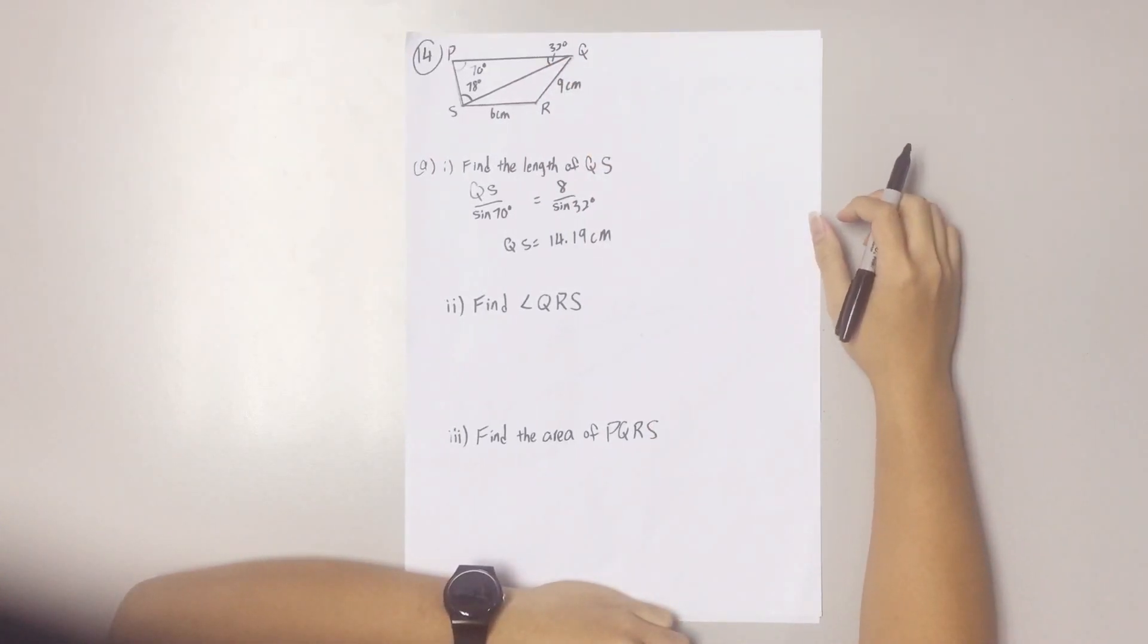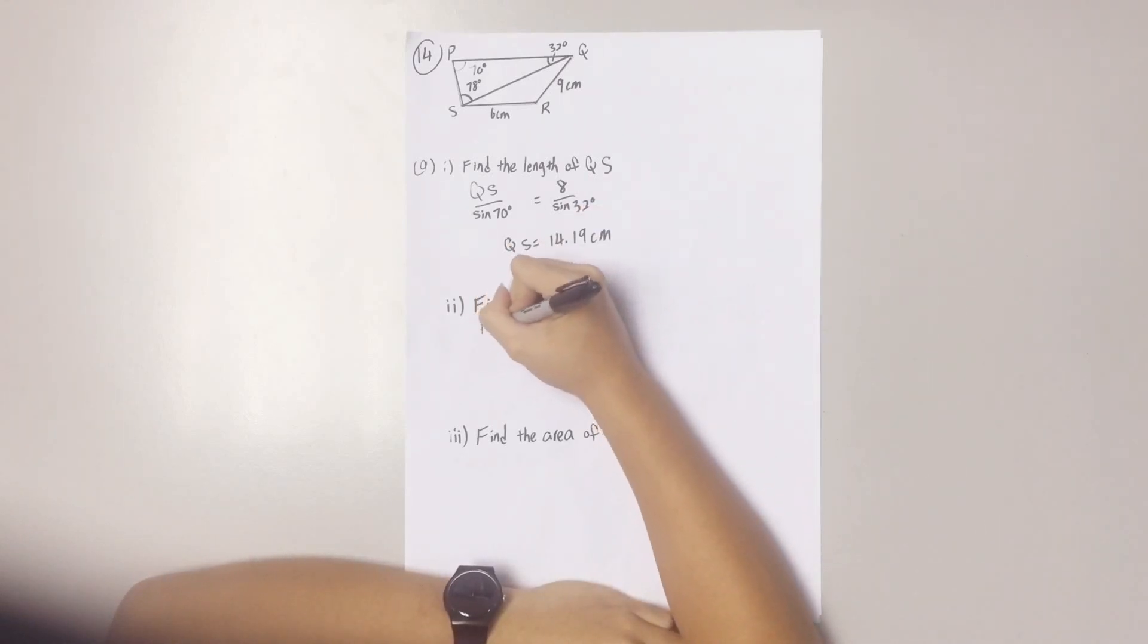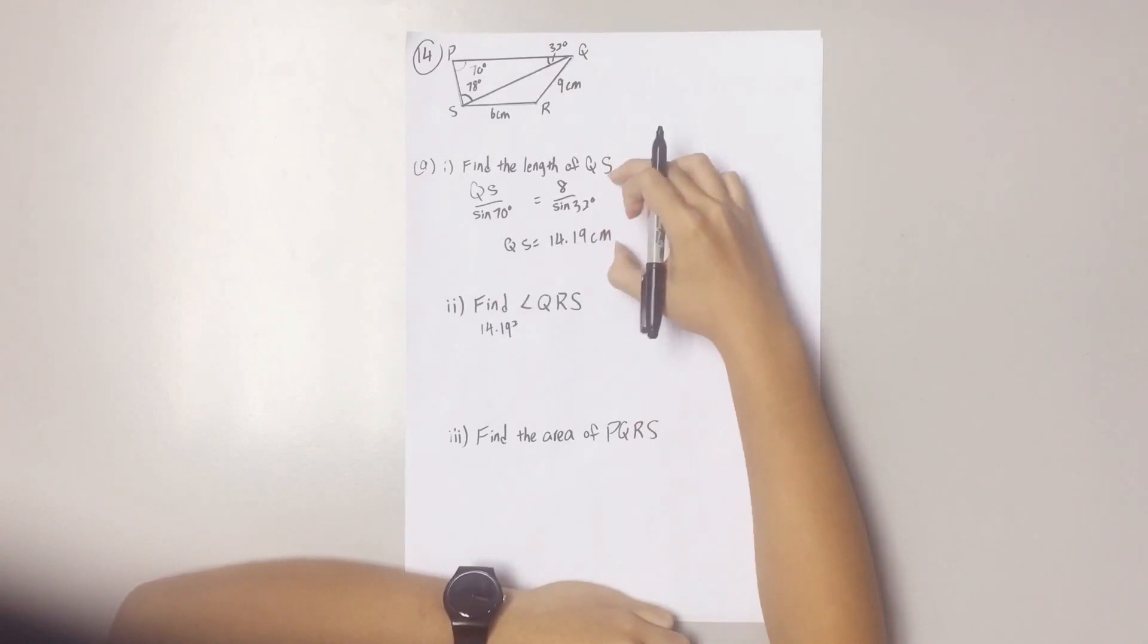For this question, we need to use the cosine rule. So you put this value that you found on your first question.